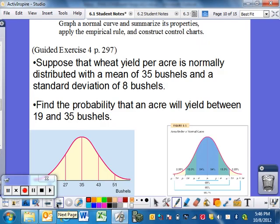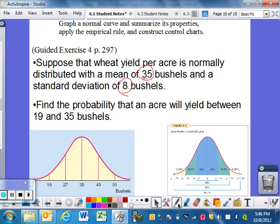So here's another one. This is strictly guided exercise from page 297. I tried to pull it out and draw this out for you. So suppose that we have a wheat field, and the acreage in it is normally distributed with a mean of 35 bushels per acre, and a standard deviation of 8 bushels. So what I've done with this picture down here is set it up for you. And notice the mean is 35, standard deviation of 8 each direction. So 1 to the right, 1 to the left, 2 to the right, 2 to the left, and so on.